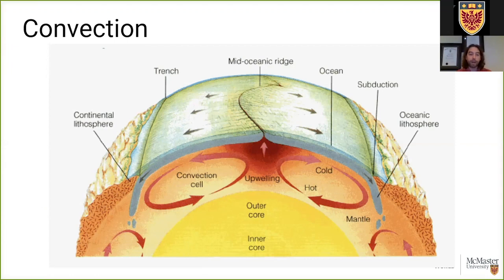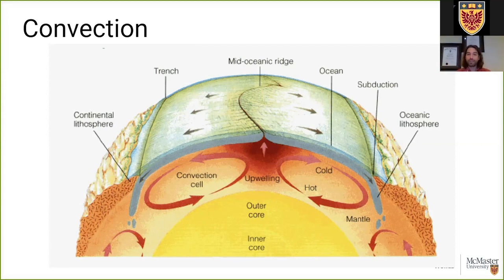Mark's question about whether this process will ever run out — yes, it absolutely will. We have two sources of heat driving convection. The first is primordial heat left over from the planet's formation 4.5 billion years ago, when gravity compressed particles together and everything heated up. The second is heat actively generated from radioactive decay — mainly through uranium, thorium, and potassium — where elements break down and release energy as heat. Scientists currently know about 44 terawatts of heat flow from the core to space, equivalent to about one billion microwaves.